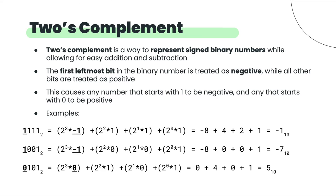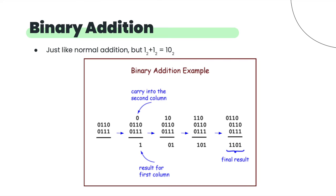Binary addition is like the addition you learned in elementary school, except that 1 plus 1 equals 10 in binary. So there's a lot of carrying involved. When adding two numbers, they both have to be the same number of bits — especially for signed or two's complement numbers. If you end up with an extra bit at the front, you just truncate it, and the right answer will always be the four-bit result.